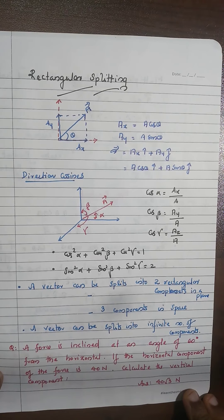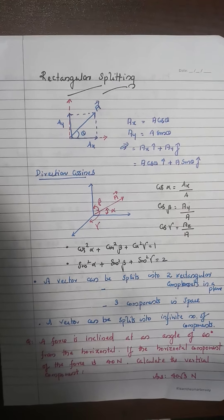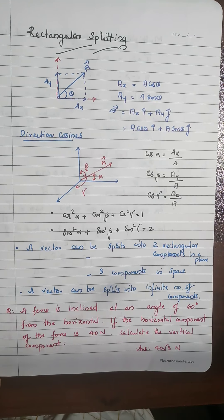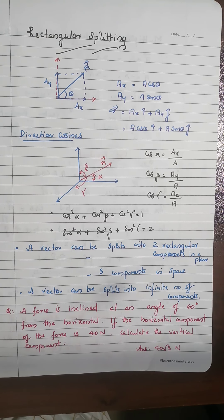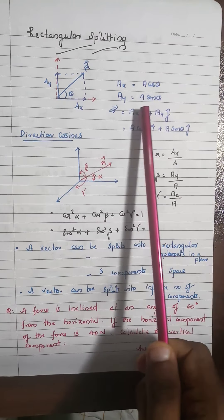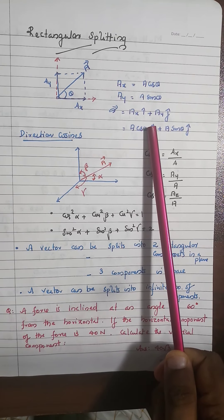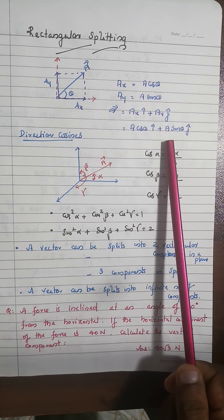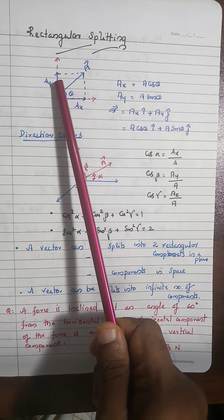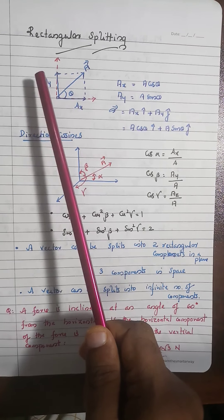Rectangular splitting: if vector A makes an angle θ with the x-axis, it can be split into two rectangular components — the horizontal component Ax = A cosθ and the vertical component Ay = A sinθ. So vector A = Axî + Ayĵ = A cosθ î + A sinθ ĵ. But if θ is measured from the vertical, then Ax = A sinθ and Ay = A cosθ.